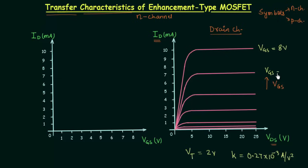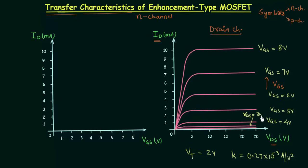The second curve is for VGS equal to 7V, the third for 6V, the fourth for 5V, the fifth for 4V, and this one here is for VGS equal to 3V. The last one, where the drain current is equal to 0, is for VGS equal to 2V. You can see the drain current is 0 throughout when VGS equals the threshold voltage.